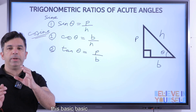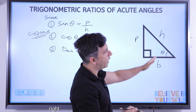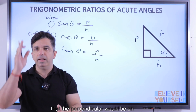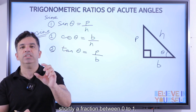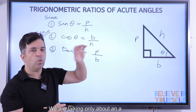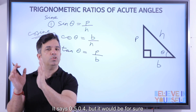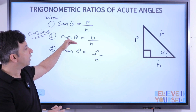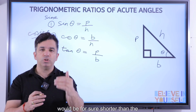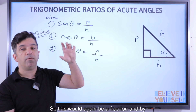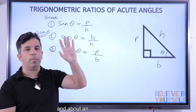In grade 10th we understood that since sine theta is perpendicular upon hypotenuse, and in a right triangle the perpendicular is shorter than the hypotenuse, sine theta will always be a fraction between 0 and 1 — for an acute angle triangle it could be 0.5, 0.4, but always less than 1. The same logic applies to cos theta: since the base is shorter than the hypotenuse, cos theta is also a fraction between 0 and 1 for an acute angle triangle.